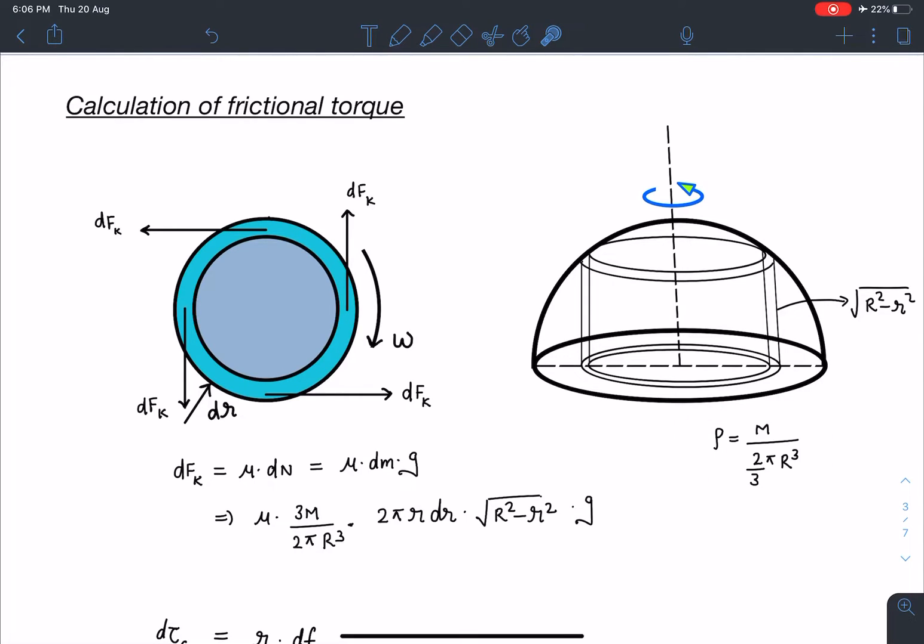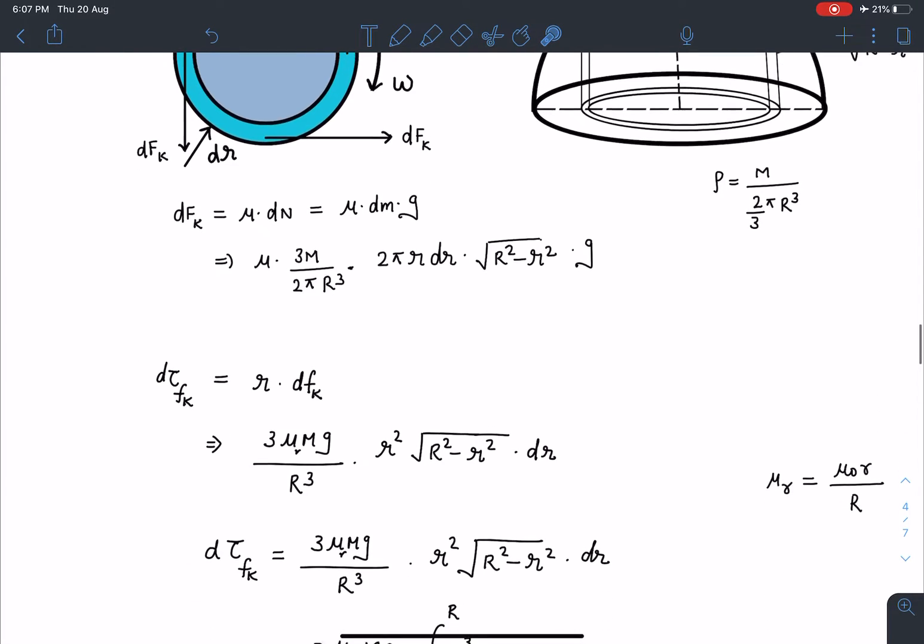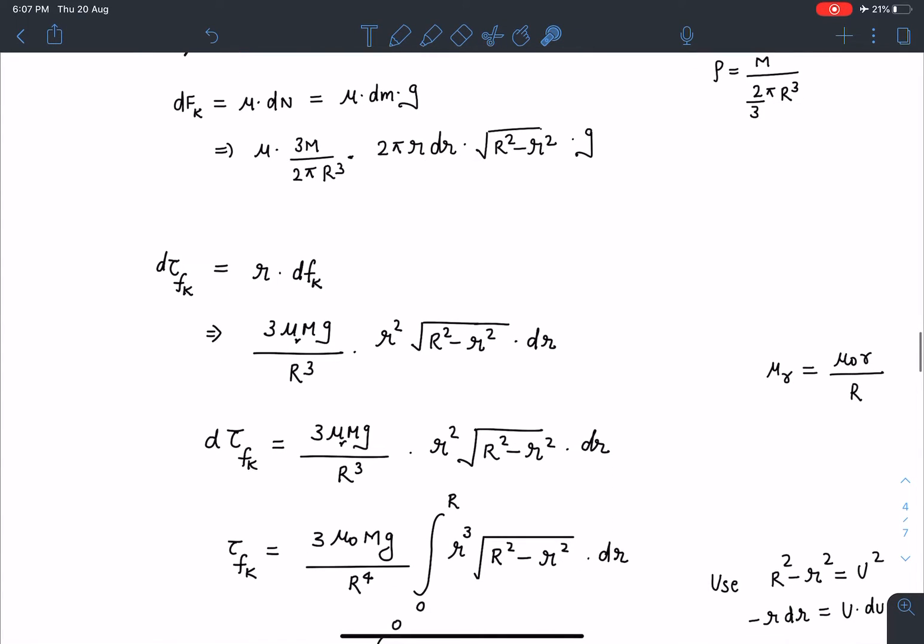So mu, density into volume into g. Volume of this cylindrical shell is its base area which is 2 pi r dr, and its height is root of R square minus small r square. Once I get the expression of small friction force acting on these differential rings, I can calculate the torque about the axis. I can write d tau fk as r times dfk. This is going to provide the retardation to this hemisphere due to which it stops.